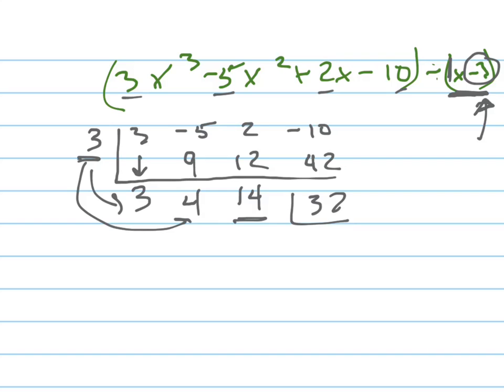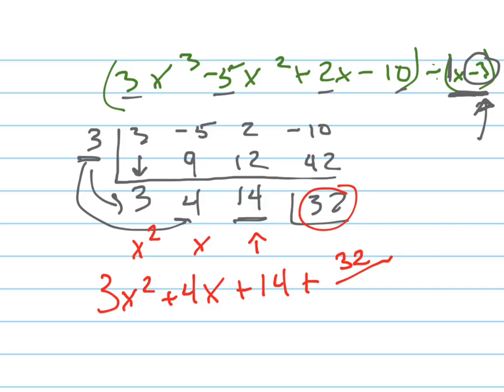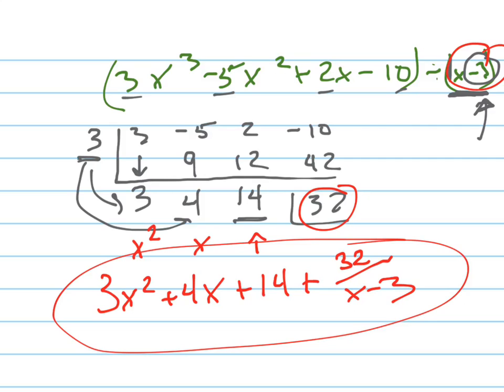So this is your answer. See how much easier that was? Synthetic division is a lot easier, but you can't always do synthetic division. That's why you've got to learn long division. This is your x squared term, this is your x term, this is your linear term, and this is your remainder. So we write it out: 3x squared plus 4x plus 14 plus 32 over x minus 3. And there's your answer.